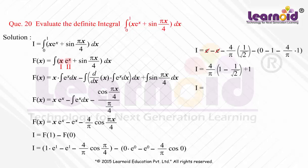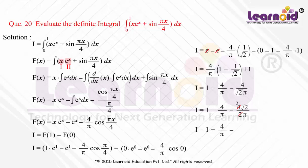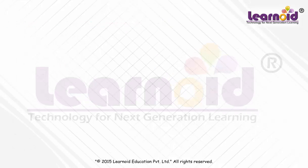i equals 1 plus 4/π minus 4/(√2·π), which simplifies to 1 plus 4/π minus 4√2/(2π), giving the final answer: i equals 1 plus 4/π minus 2√2/π.